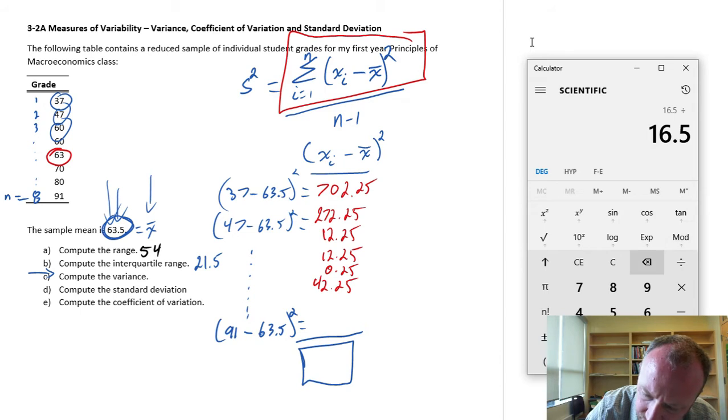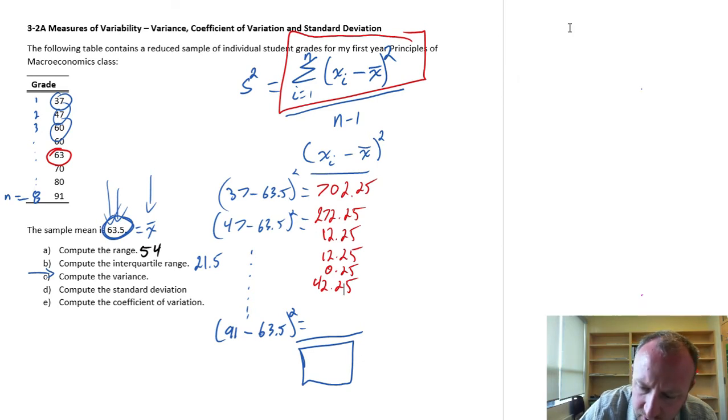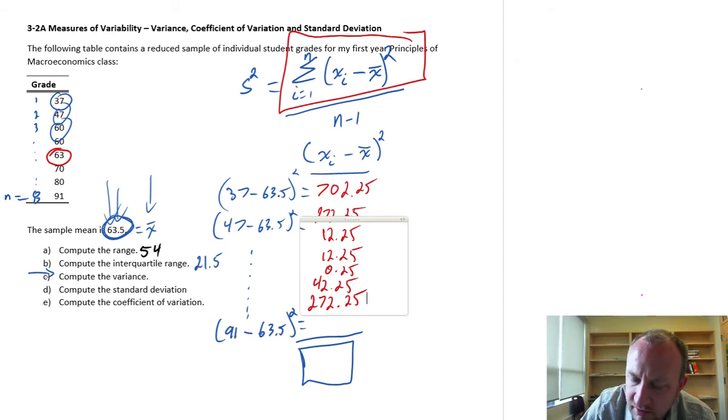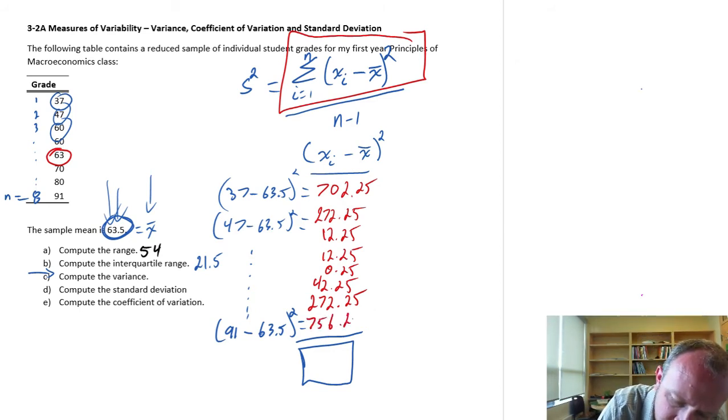80. Oops. Okay, try that one again. 80 minus 63.5. Let's square that. 272 and a quarter. And one more. 91. 756 and a quarter. Okay.